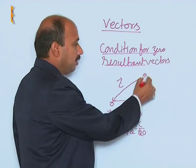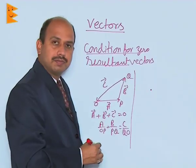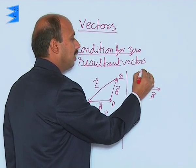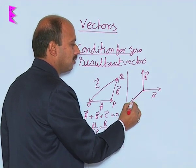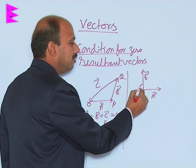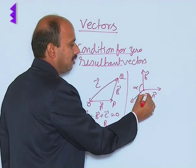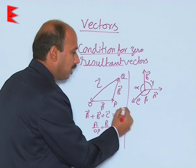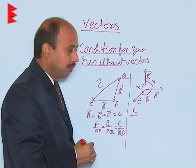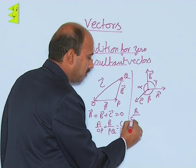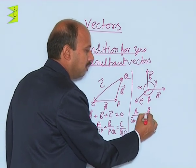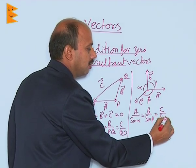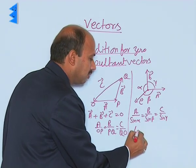See, if you are taking all the 3 vectors at a point, here vector a is to this side, vector b is to this side, and vector c is to this side. The angle between b and c is alpha, the angle between a and c is beta, and the angle between a and b is gamma. Then we can also write: magnitude of vector a upon sin of angle alpha is equal to b upon sin of angle beta is equal to c upon sin of angle gamma. This is also known as Lamy's theorem.